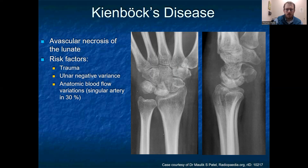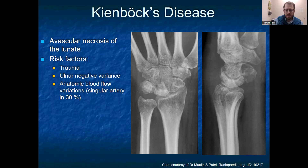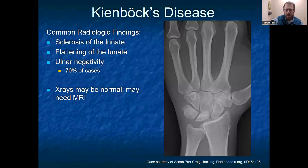Kienböck's disease is the last clinical scenario — avascular necrosis of the lunate. Risk factors include acute or repetitive trauma, and ulnar negativity, because when the ulna is short, all stress goes through the radiolunate joint, predisposing to avascular necrosis. There can also be anatomic variations in blood flow. Common radiologic findings include sclerosis of the lunate, flattening of the lunate, and ulnar negativity. X-rays may be normal initially, and MRI may be needed to show early bone marrow edema.